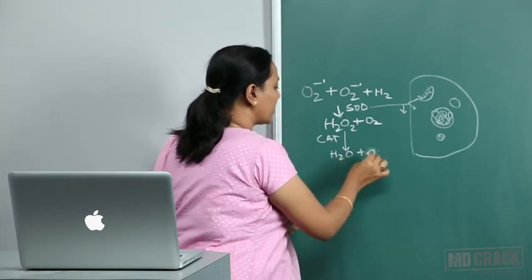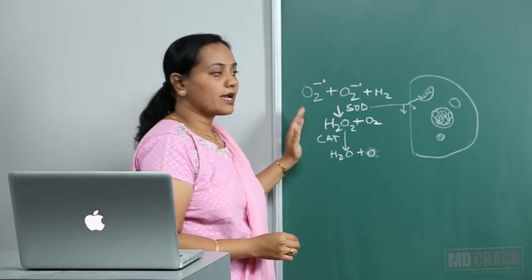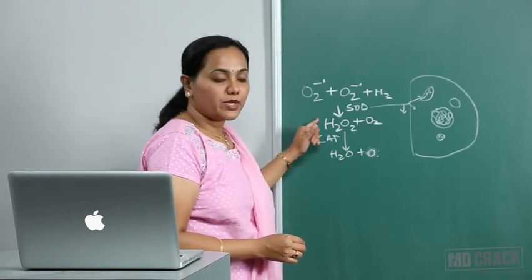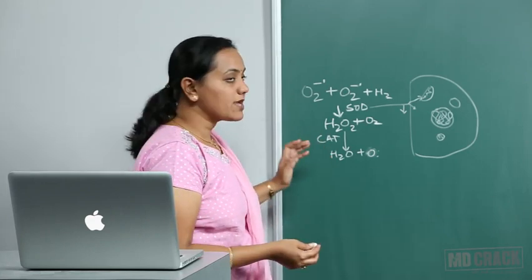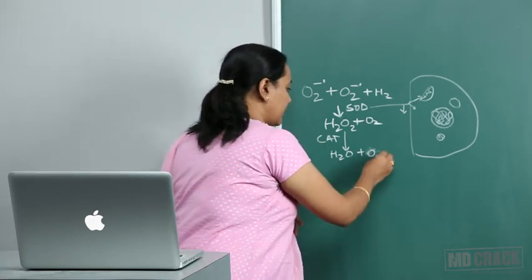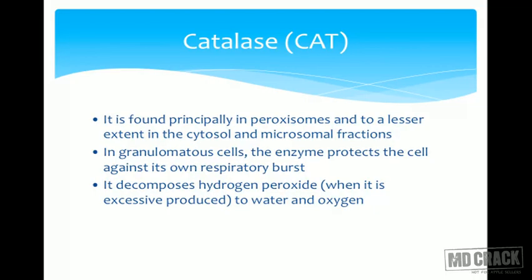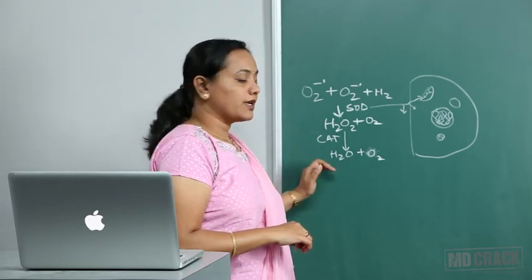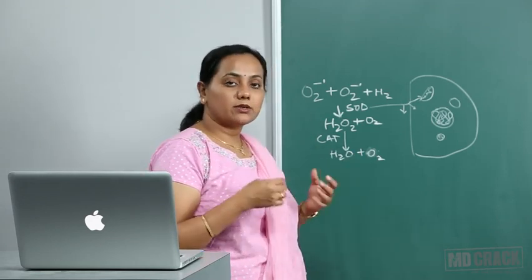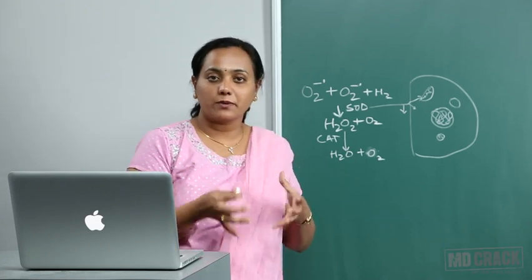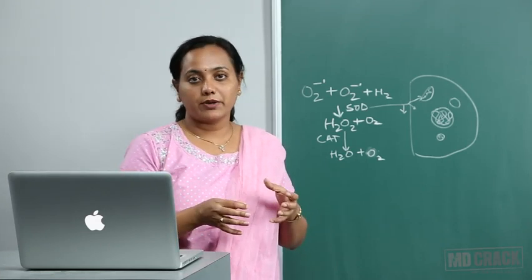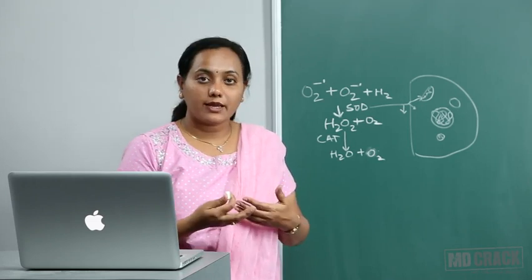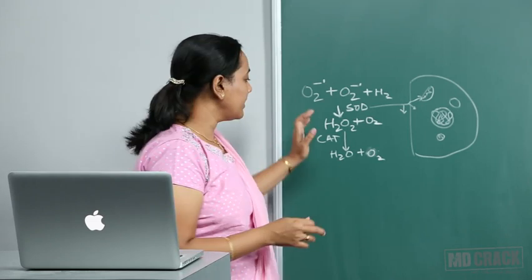What is important is catalase's action: it converts hydrogen peroxide into non-radical products — water and oxygen. The cell does not know how much hydrogen peroxide is required to kill a pathogen, so if excess is produced, catalase provides a defense mechanism by decomposing the surplus hydrogen peroxide to water and oxygen.